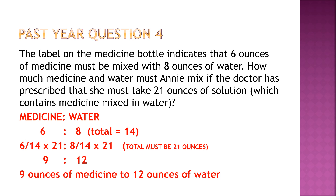Past paper question 4: a medicine label says 6 ounces of medicine must be mixed with 8 ounces of water. Amy needs 21 ounces total. The ratio medicine to water is 6:8, giving 14 total parts. Medicine: 6 out of 14 times 21. Water: 8 out of 14 times 21. So the answer is 9 ounces of medicine and 12 ounces of water.